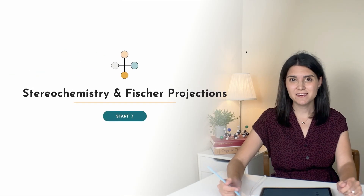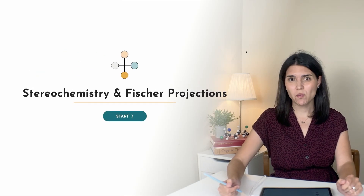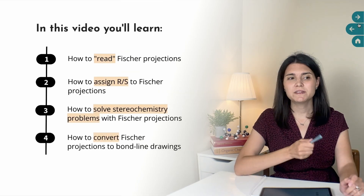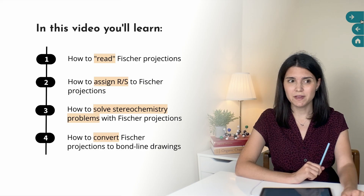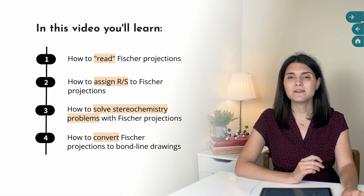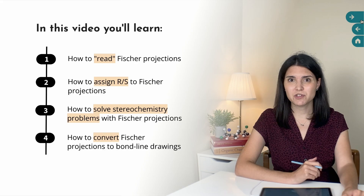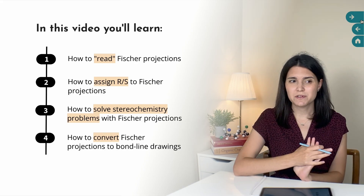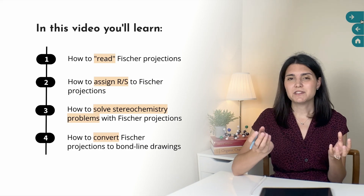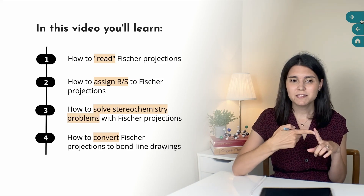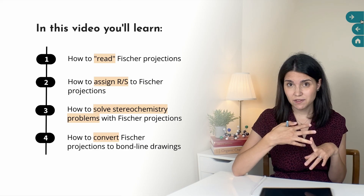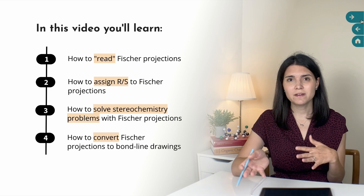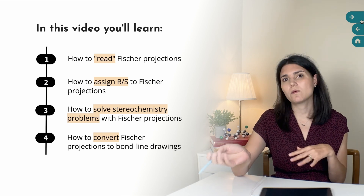In this video, you're going to learn everything there is to know about stereochemistry and Fischer projections. By the end of this video, you are going to know what Fischer projections are and how to read them, how to assign the R or S configuration to an asymmetric carbon in a Fischer projection, how to solve relationship problems for Fischer projections — whether they are enantiomers, diastereomers, identical, etc. — and finally how to convert Fischer projections to bond line drawings or skeletal structures, or the other way around.